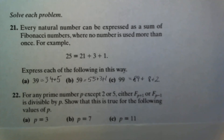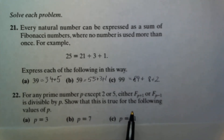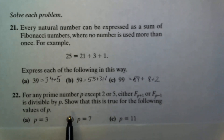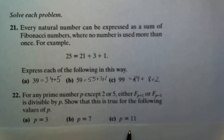Then for number 22: for any prime number P except 2 or 5, either F sub (P plus 1) or F sub (P minus 1) is divisible by P. We'll show this is true for the following values of P: P equals 3, P equals 7, and P equals 11.